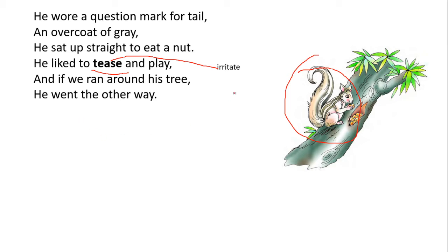Now, we'll discuss the poetic devices used. First, we will discuss rhyming scheme. See, the last word, tail, grey, nut, play, tree, way.